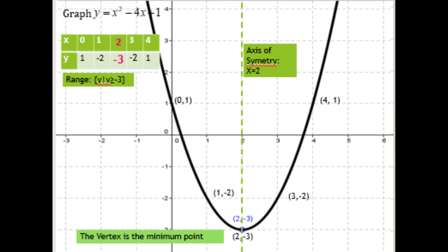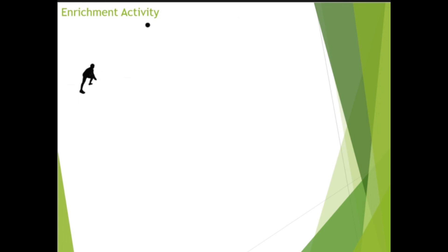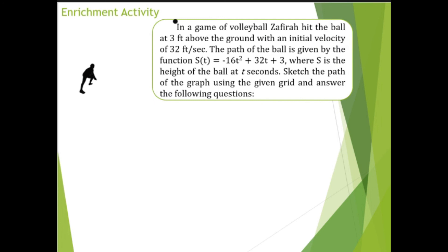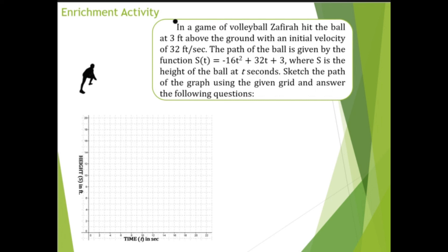For your enrichment activity: In a game of volleyball, Zafira hit the ball at 3 feet above the ground with an initial velocity of 32 feet per second. The path of the ball is given by s(t) = -16t² + 32t + 3, where s is the height at t seconds. Sketch the path using the given grid and answer: (1) What kind of function models the path? (2) What is the maximum height reached by the ball? (3) What is represented by the maximum point of the graph?